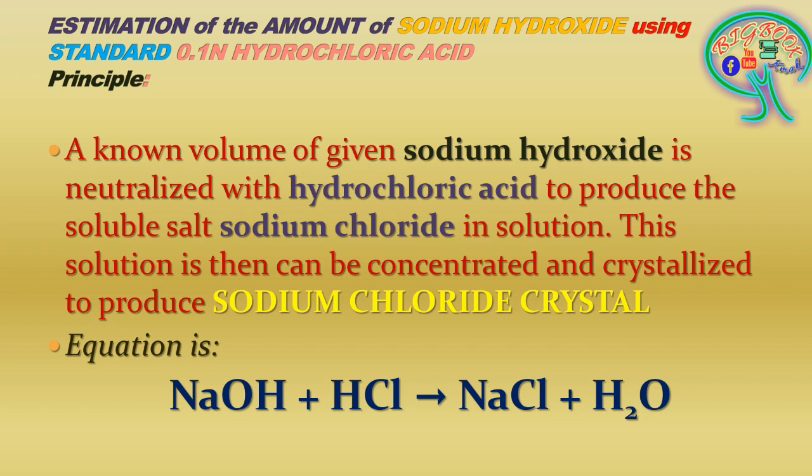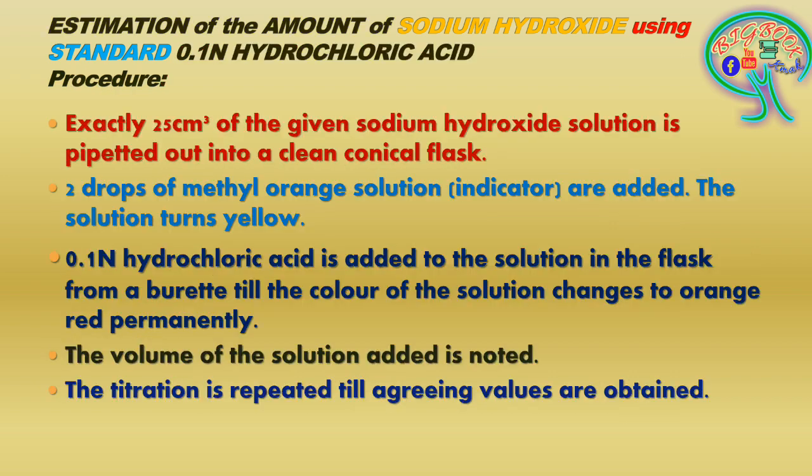In some lab manuals and experimental descriptions, the use and significance of the indicator is also mentioned. I have not mentioned the indicator here just to show the reaction. If you want to include the indicator's importance or significance, that also can be included in the principle. This is the principle of the estimation of sodium hydroxide using standard 0.1 N hydrochloric acid.